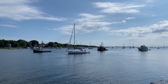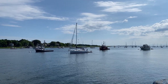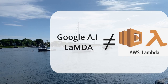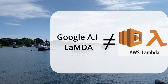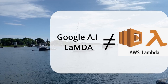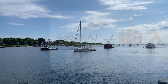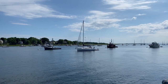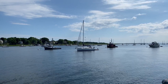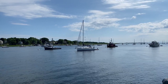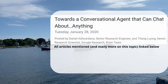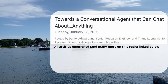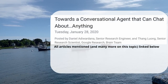First thing we have to get out of the way: there is something else in the world called Lambda, and that is from AWS — this is not that. This is a new neural network feature in machine learning from Google AI, and it was originally derived from a paper they published in 2020.